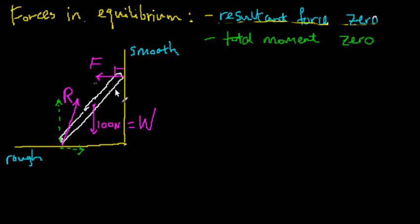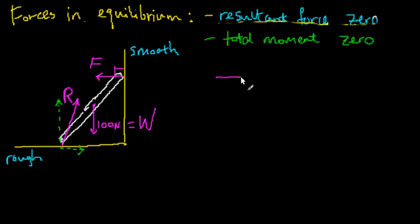Think of each of these forces as an actual arrow that you can move around, but you're not allowed to change its direction. I'm going to take force F and move it. The way is to move the arrows until a tail touches a tip. It doesn't really matter which tail touches which tip — in the end it must always form a closed triangle.